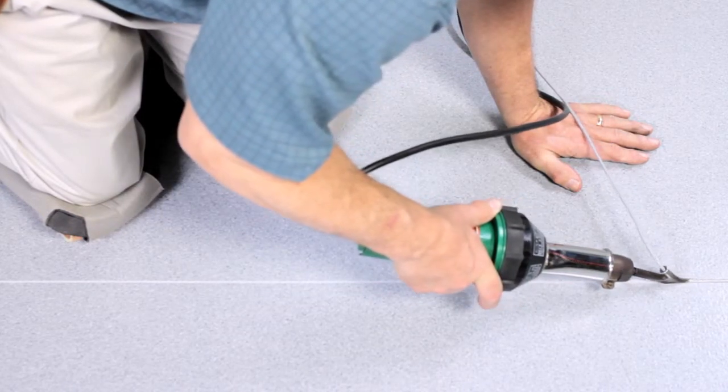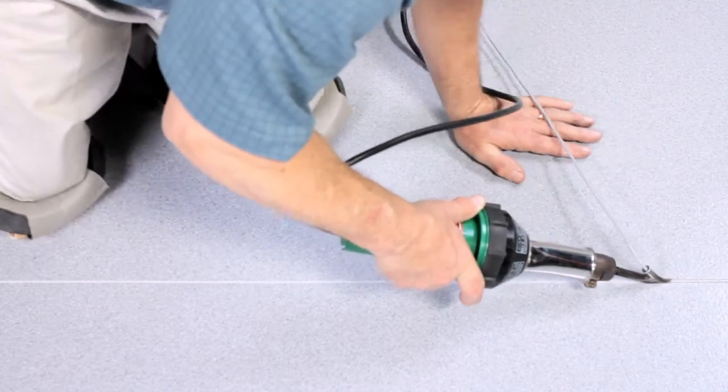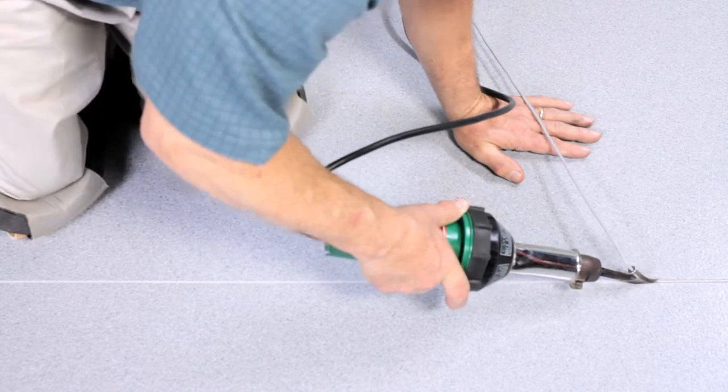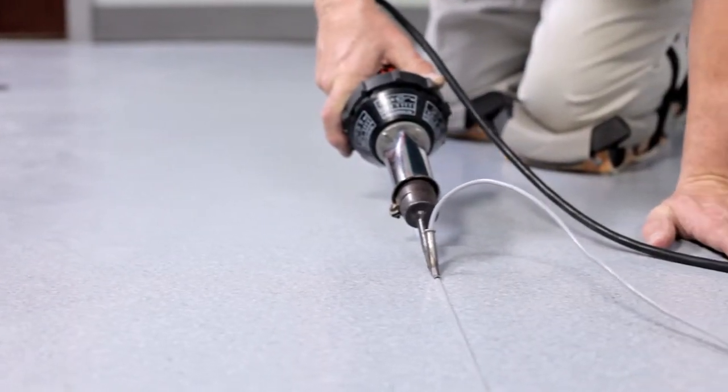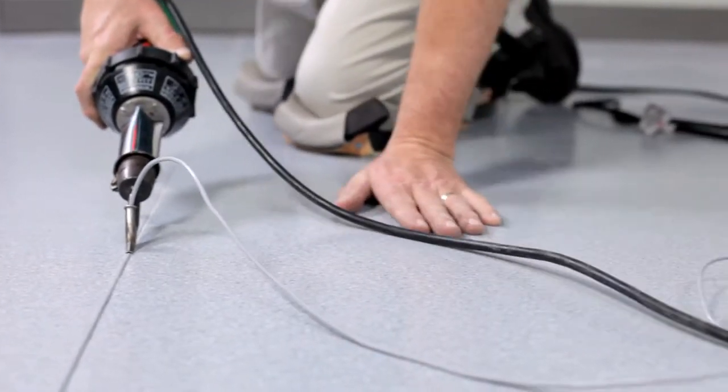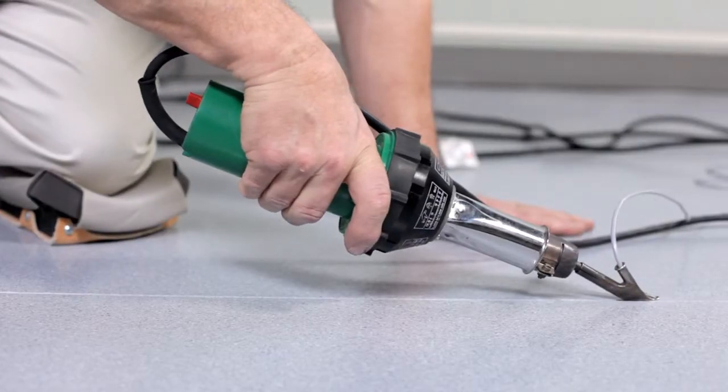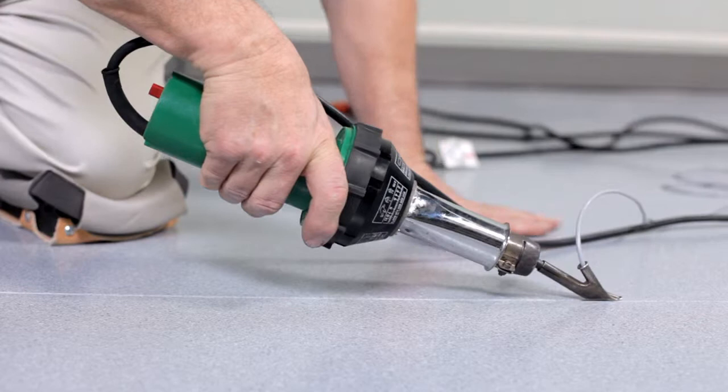Always test the heat setting on a scrap of flooring before proceeding to weld the entire seam. Cut a length of weld rod several feet short of the total seam length. Insert the rod into the preheated nozzle and beginning at the wall, melt the rod into the groove.